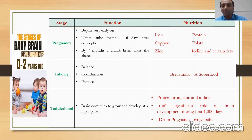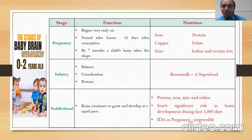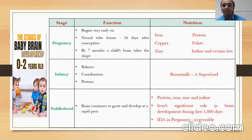The first thousand days of nutrition are critically important for a child's brain development — both tremendously potential and enormously vulnerable. This period is divided into three stages: pregnancy, infancy, and toddlerhood. Brain development begins very early in pregnancy, and the neural tube develops as early as 16 days after conception. Key nutrients playing a great role here are iron, protein, zinc, folate, iodine, and certain fats. By seven months of pregnancy, a child's brain takes the shape of the adult brain.